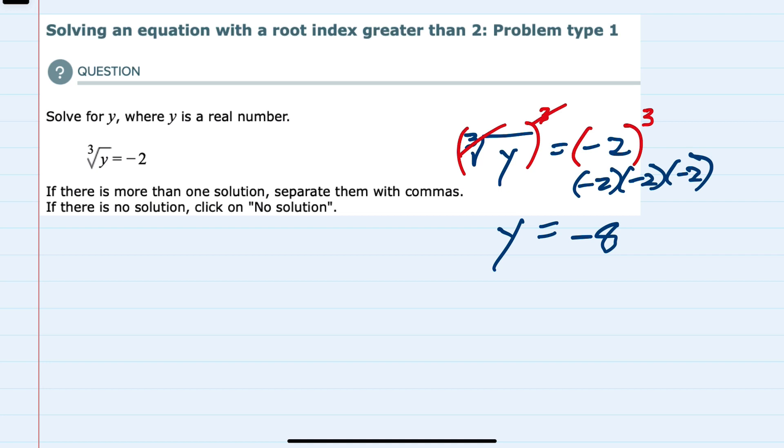So if this were a square root, I would substitute that back in to make sure I wasn't taking the square root of a negative. But since it's a cubed root, there's no restriction. You can take the cubed root of a negative number. So our solution of negative 8, the cubed root of negative 8, is negative 2, so this is our solution.